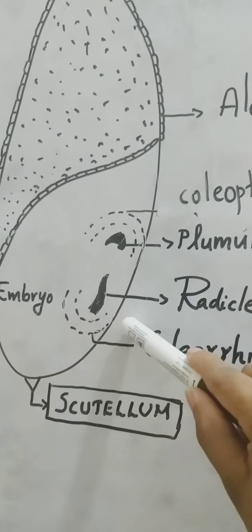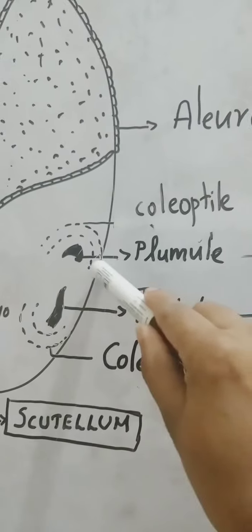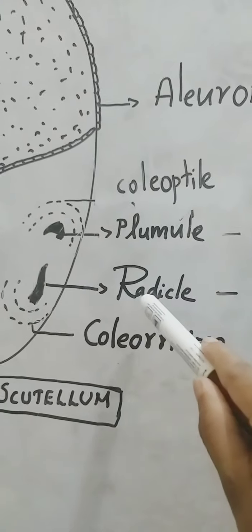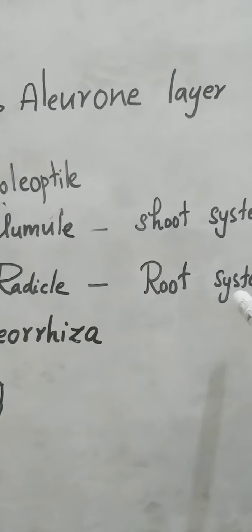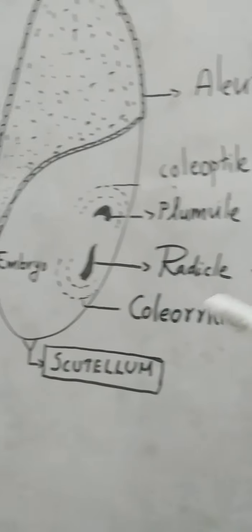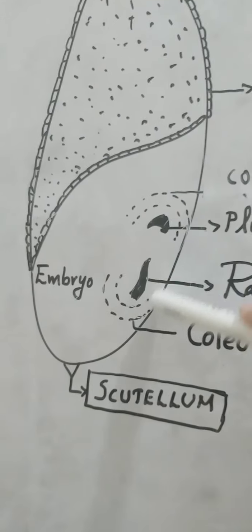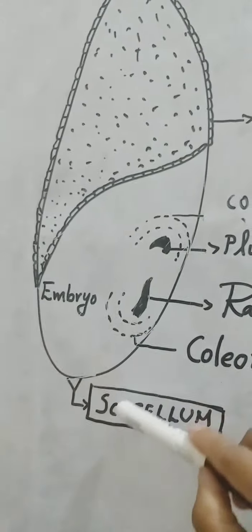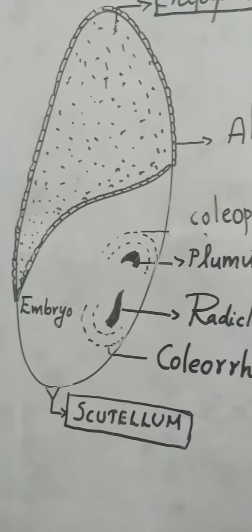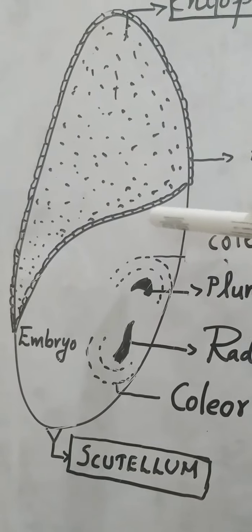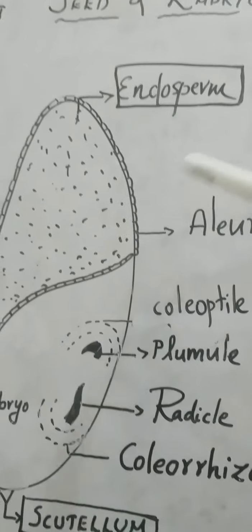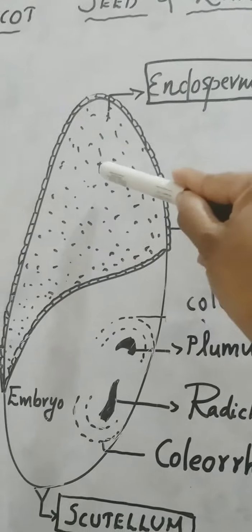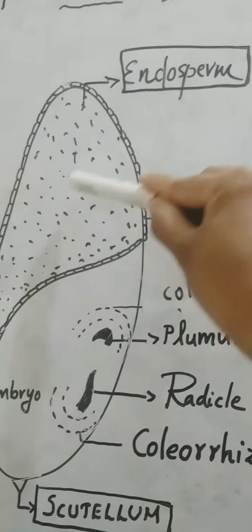During seed germination, as in other cases, the plumule germinates into the shoot system and the radicle grows into the root system. This entire portion which contains the embryo is known as scutellum, and here you can see a partition wall between the endosperm and the scutellum.